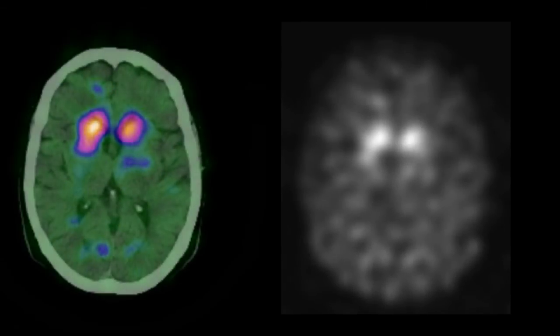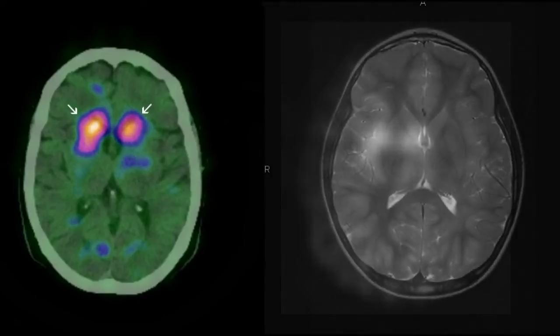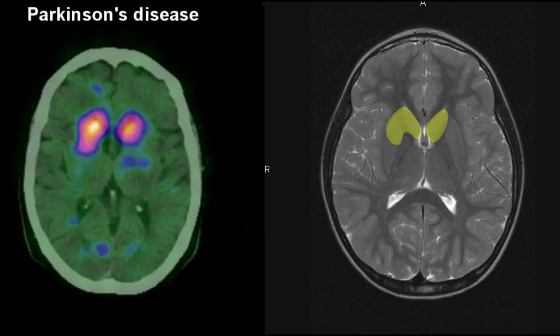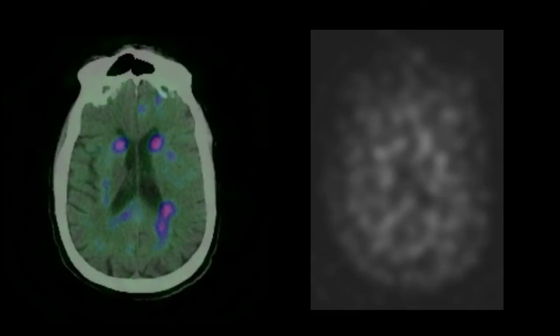This patient, on the other hand, shows an isotope pattern resembling a period, with absence of the comma tail. This is consistent with a loss of dopaminergic cells in the striatum and would indicate that the patient's symptoms are related to Parkinson's disease. Finally, this patient shows markedly reduced activity in the striatum, consistent with extensive loss of dopaminergic cells, confirming the patient's tremor is in fact related to Parkinson's.